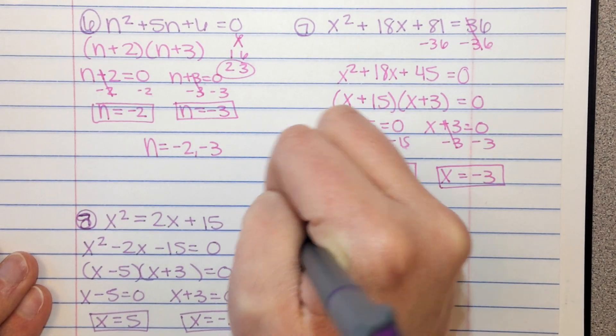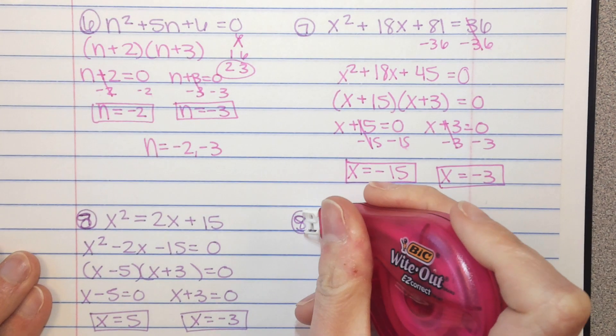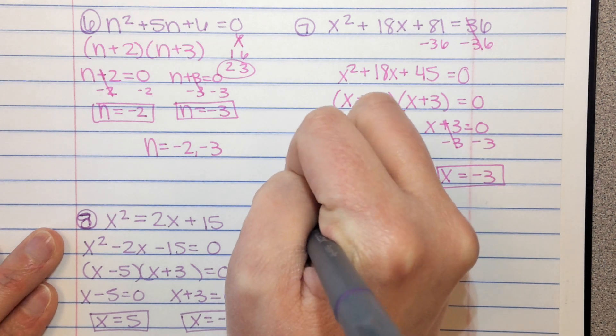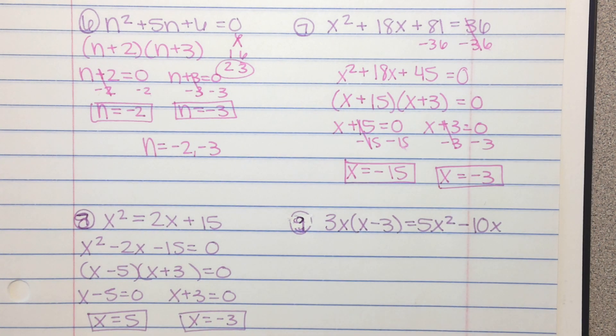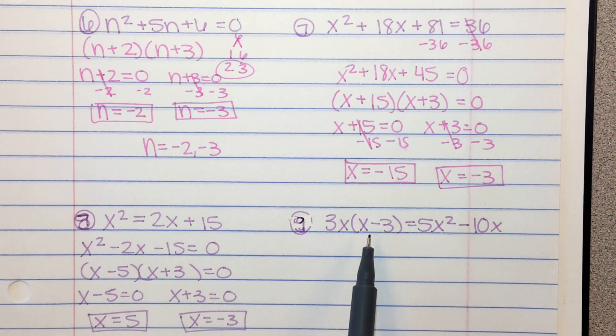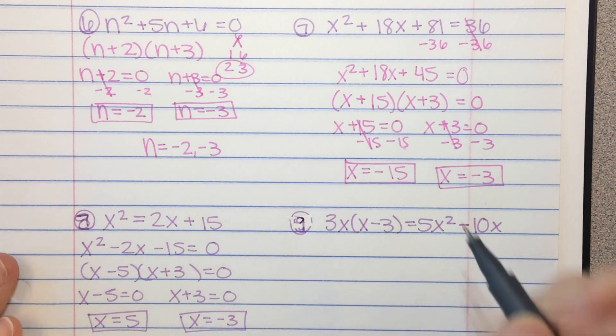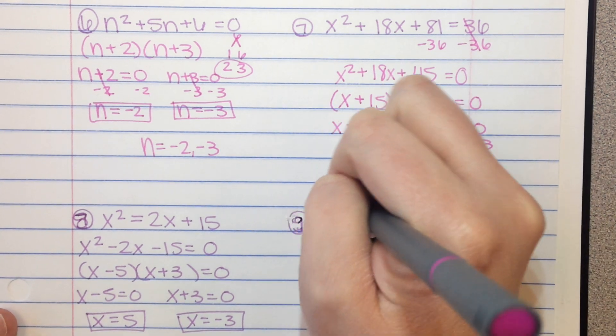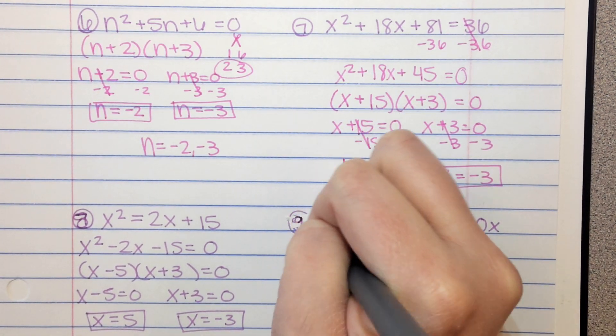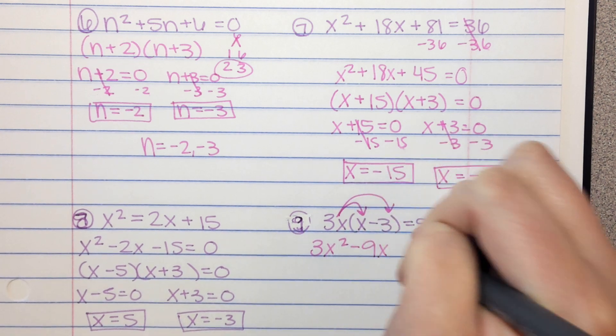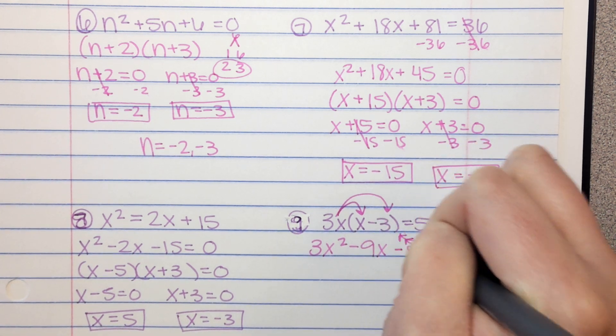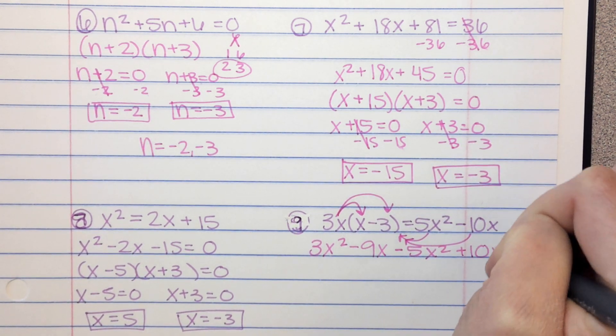And then our last example, number 9. Number 9, we have 3x times the quantity x minus 3 equals 5x squared minus 10x. So for this one, we are going to simplify, then get everything on one side. So first, I'm going to distribute this 3x, and that gives me 3x squared minus 9x. Then I'm going to go ahead and bring these other two things to the other side of the equal sign. So that's minus 5x squared plus 10x equals 0.